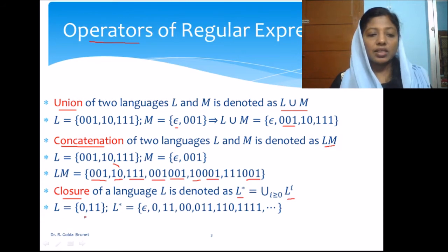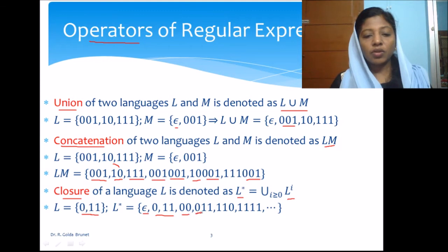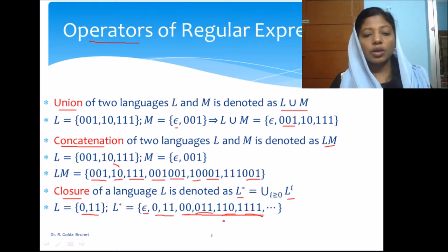Suppose L is {0, 11}. Then L* will include ε, which is L^0, and L itself. What is L^2? L^2 is L concatenated with L, so we will have: 00, 011, 110, and 1111. These four strings belong to L^2, and this continues up to infinity.